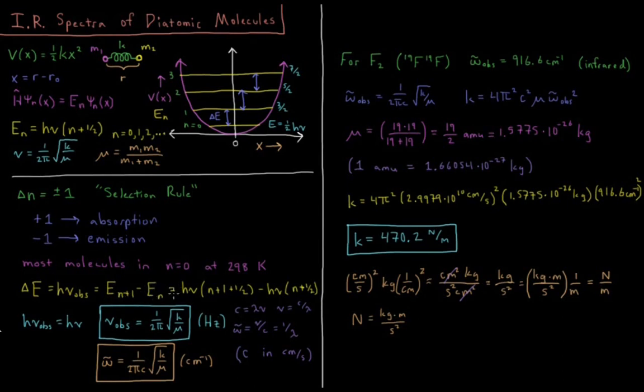In the case of absorption, that's E-n plus one minus E-n. So that is equal to h nu of n plus one plus one half, substituting in n plus one for n here, minus E of n, h nu n plus one half.